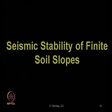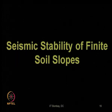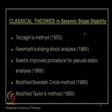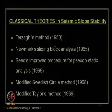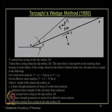Next, we started the subtopic on seismic stability of finite soil slope. We discussed classical theories in seismic slope stability analysis using the conventional pseudo-static approach, beginning with Terzaghi's approach in 1950, followed by the Newmark sliding block method in 1965. This is Terzaghi's wedge method for slope stability.